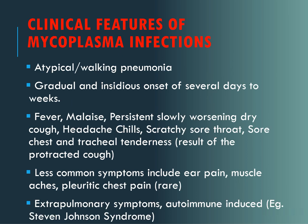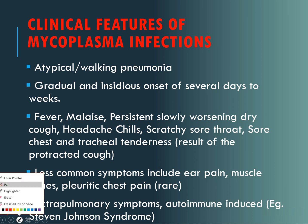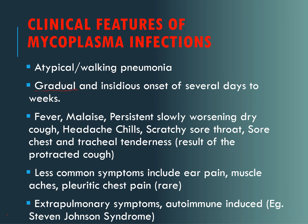The clinical features of mycoplasma: the pneumonia is called atypical or walking pneumonia because it has features which are not severe. The disease develops gradually over several days to weeks. There is a low-grade fever, malaise, a persistent dry cough, headache, chills, scratchy throat, sore throat and tracheal tenderness. Less common symptoms include pain in the ear, muscle aches or pain in the chest.